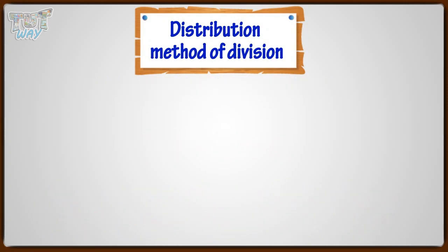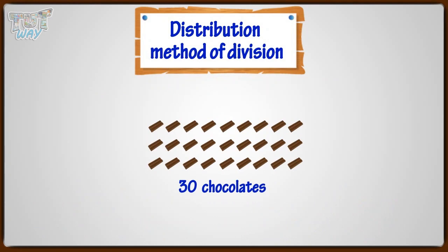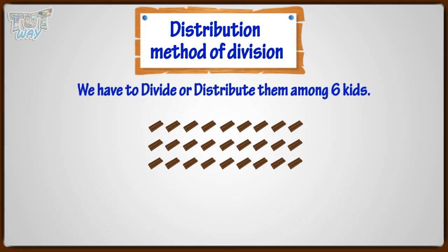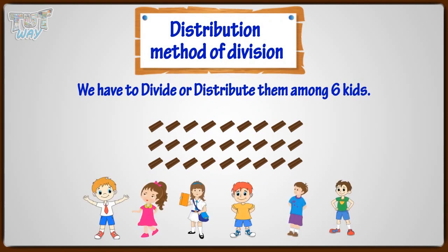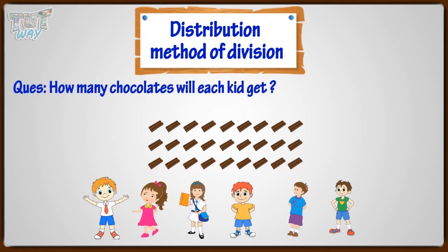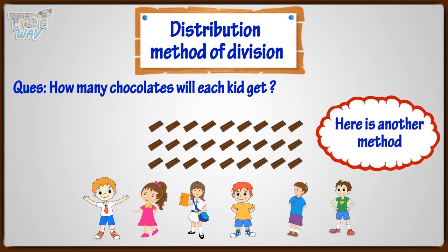Here are 30 chocolates, and we have to divide or distribute them among six kids. How many chocolates will each kid get? Here is another method: just think how many times six can go into the other number, that is, 30. Or, six multiplied by what gives us 30.